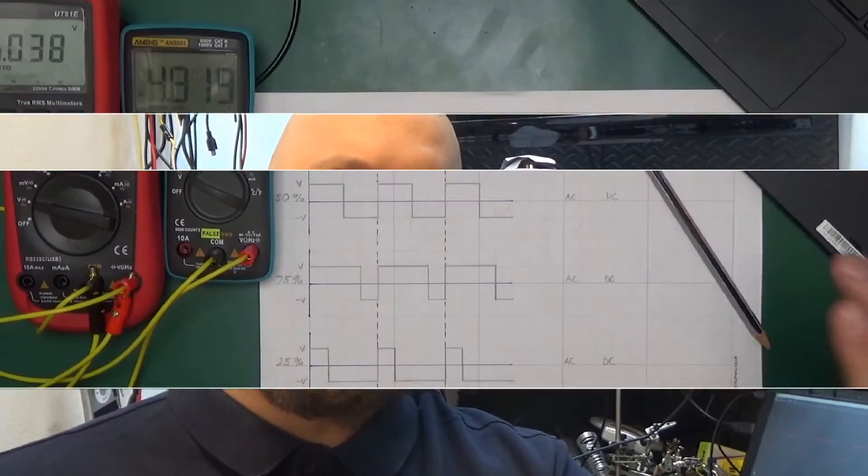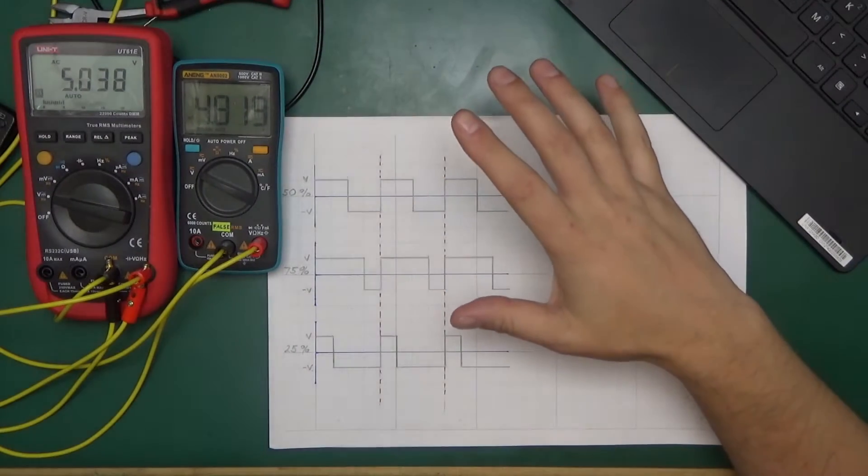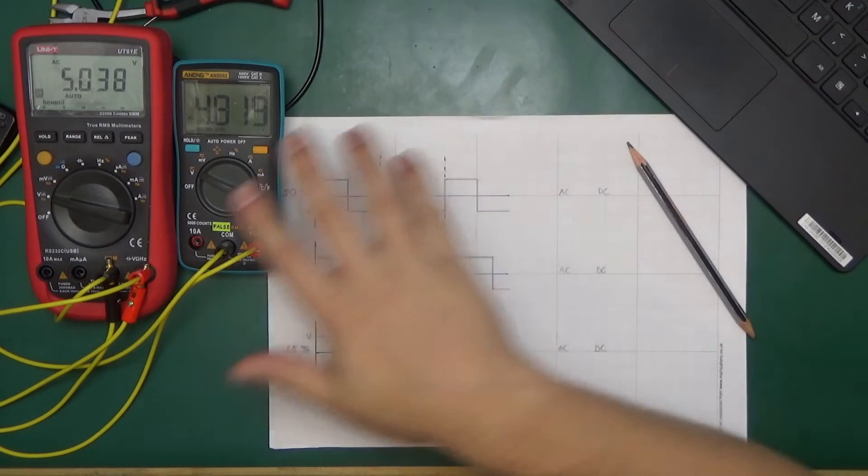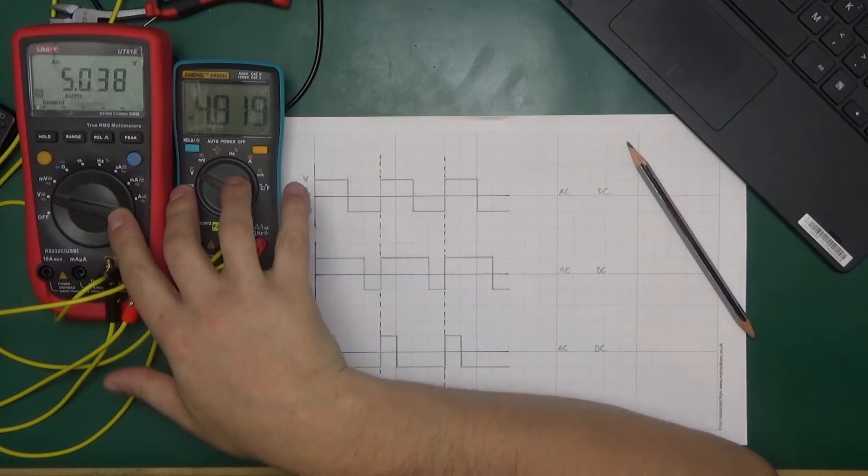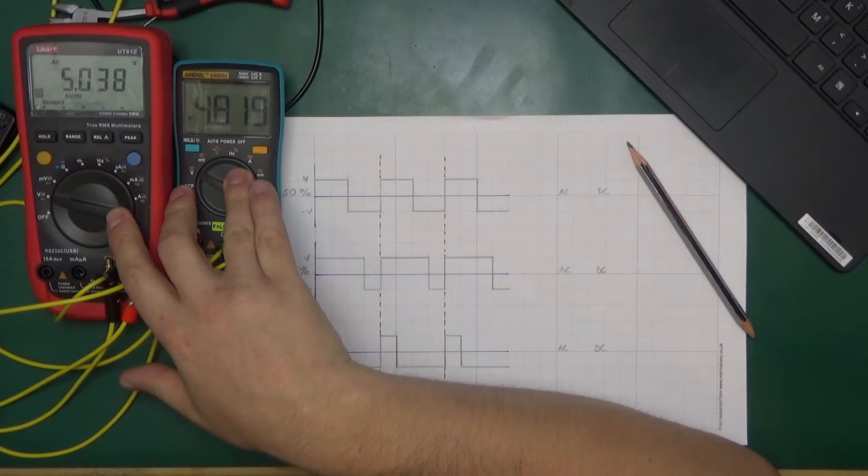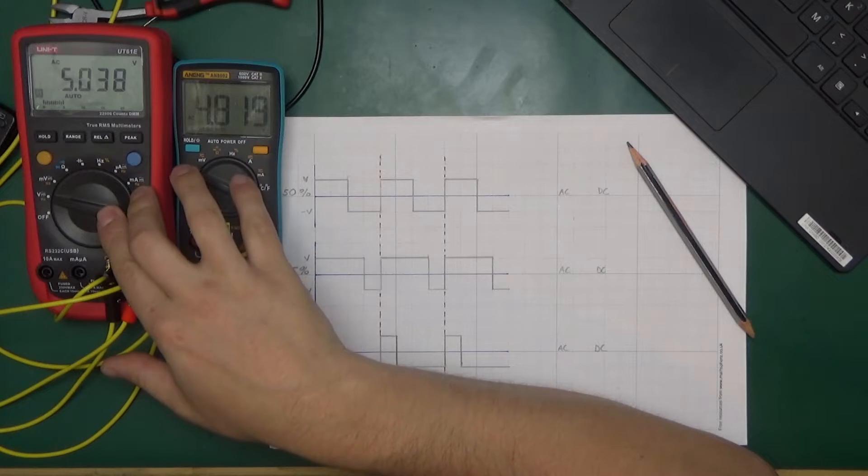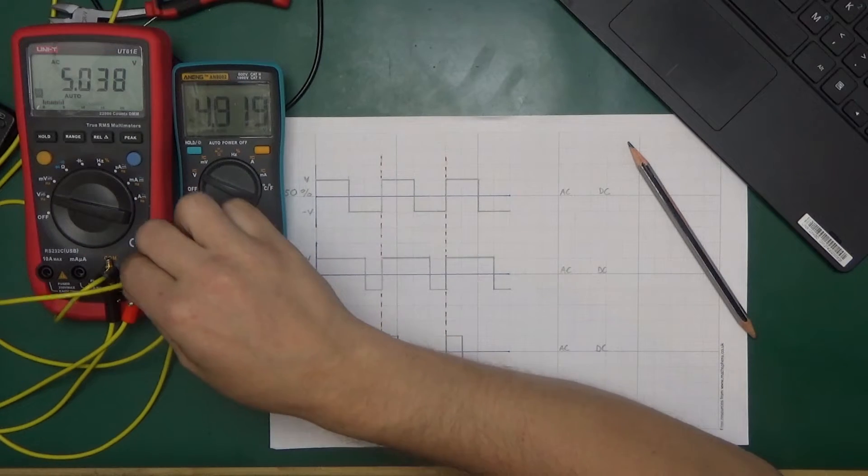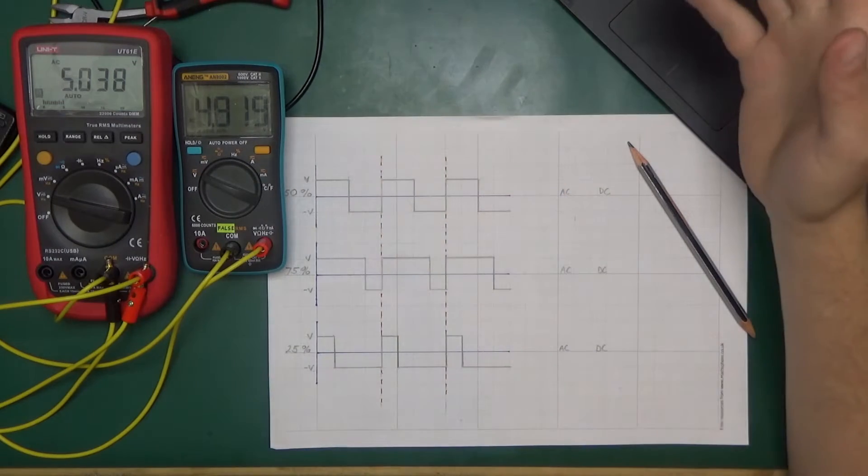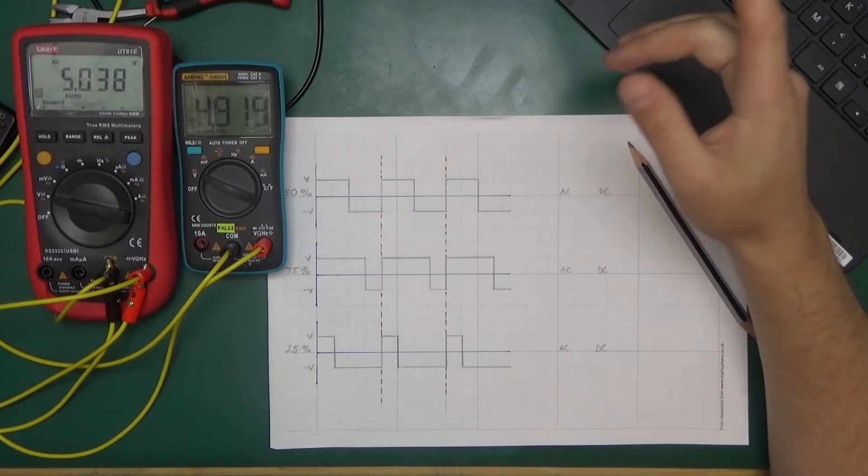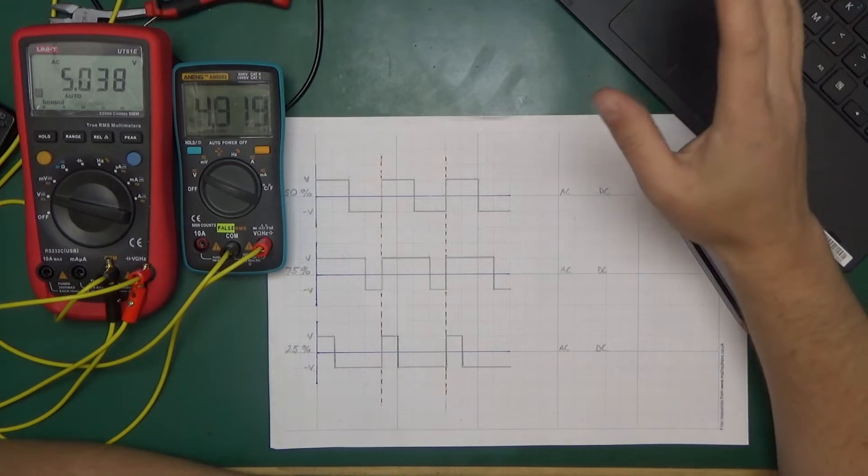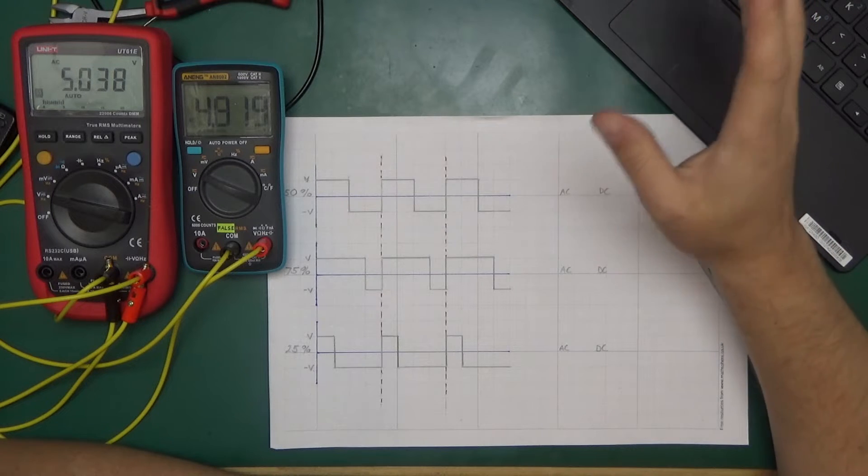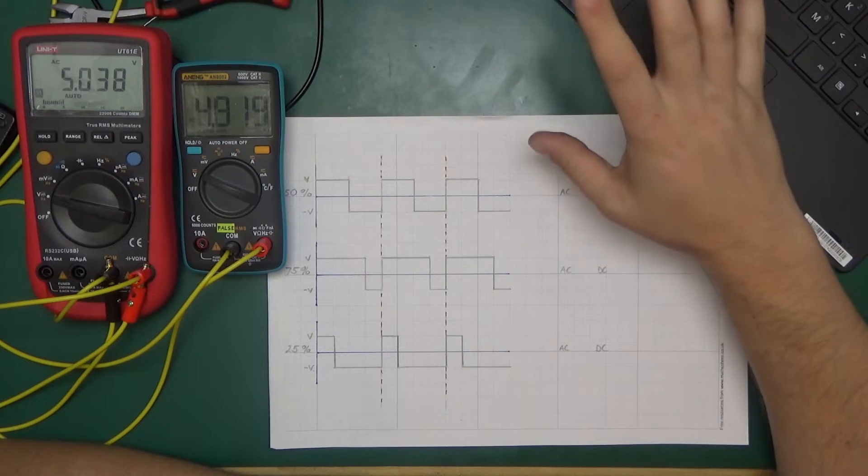So in this video I want to share what I've understood and what the concept of the RMS measurement is and how that applies specifically to a square waveform. What I have prepared is a similar setup as to what it was in the previous videos, so we have both of the true RMS multimeters, the Anang AN8002 and Unity UT61E, connected side by side. They're just daisy chained and they are connected to the signal generator and to the oscilloscope.